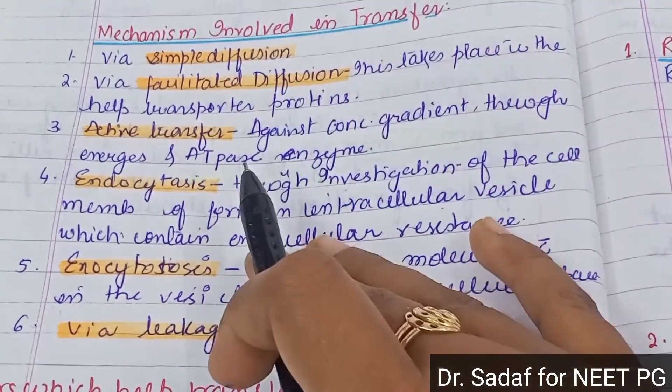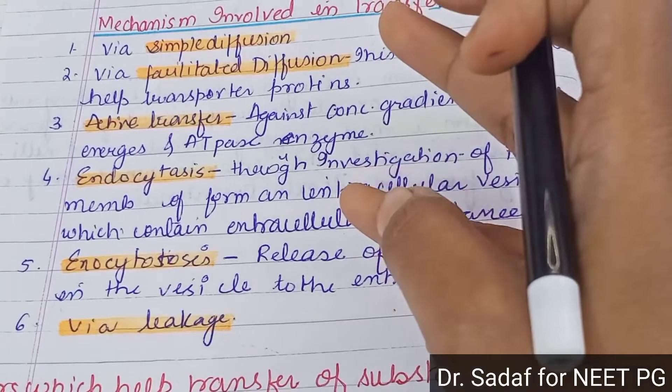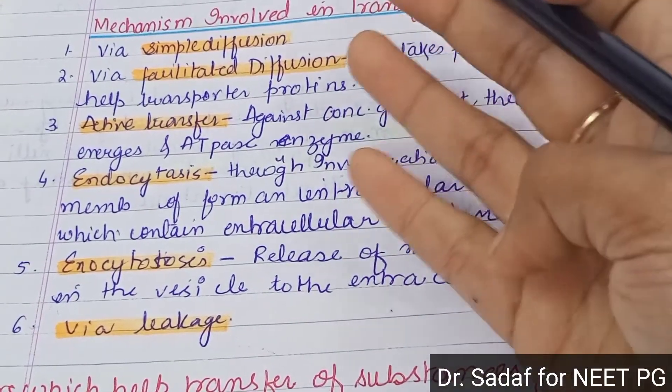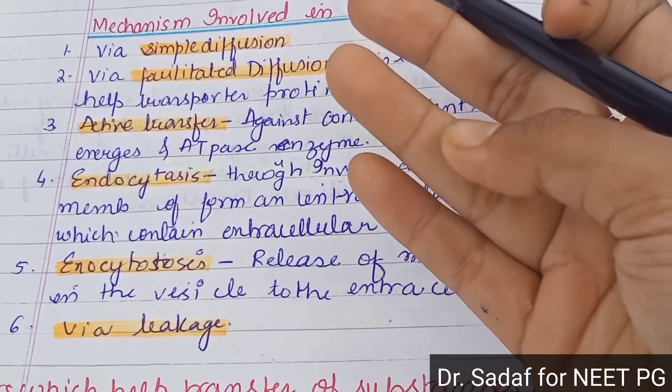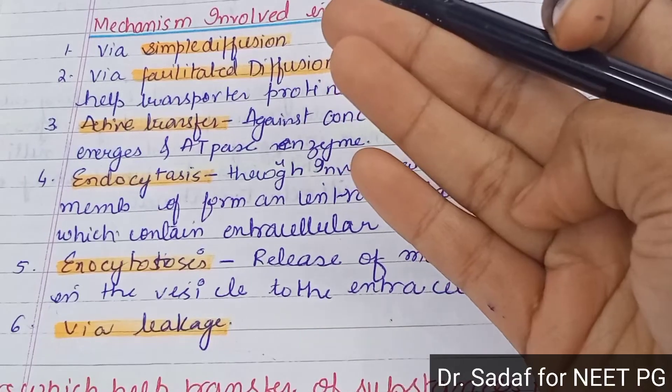In summary, the mechanisms of transport are: simple diffusion, facilitated diffusion, active transfer, endocytosis, exocytosis, and leakage.